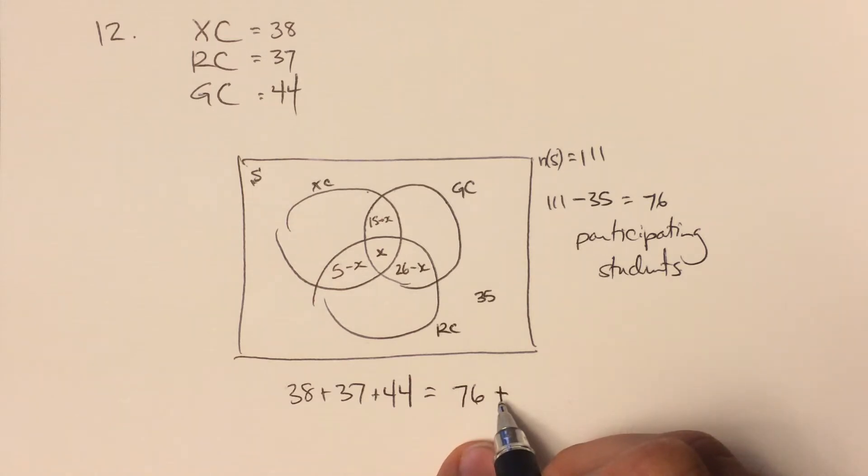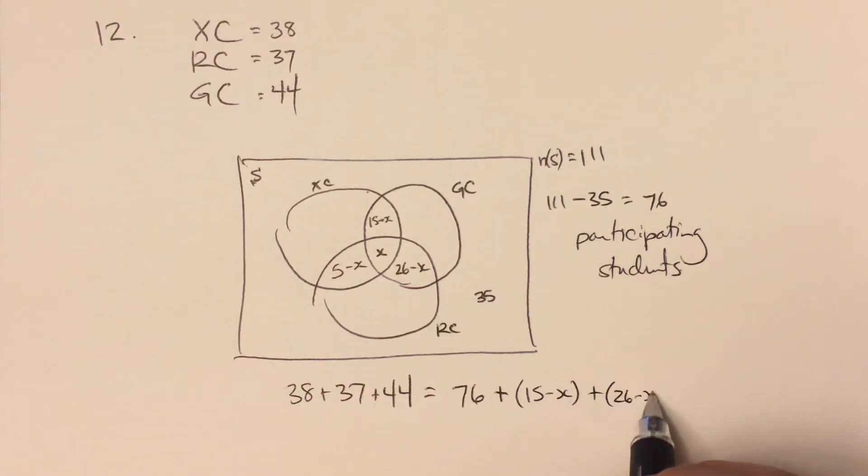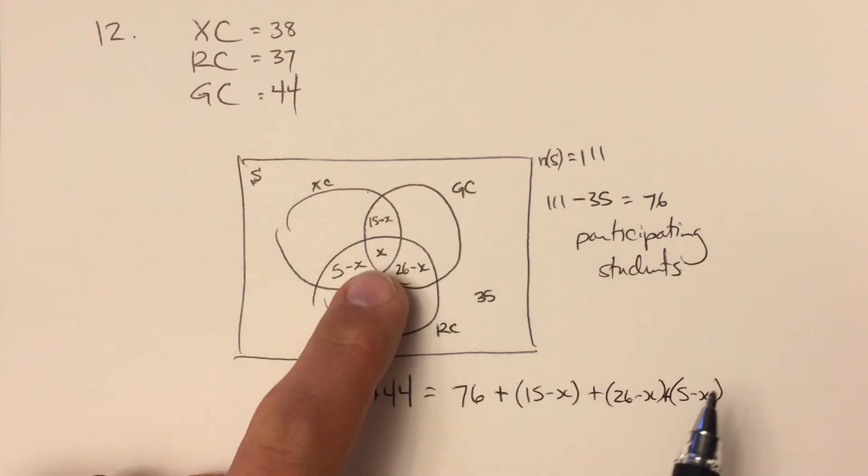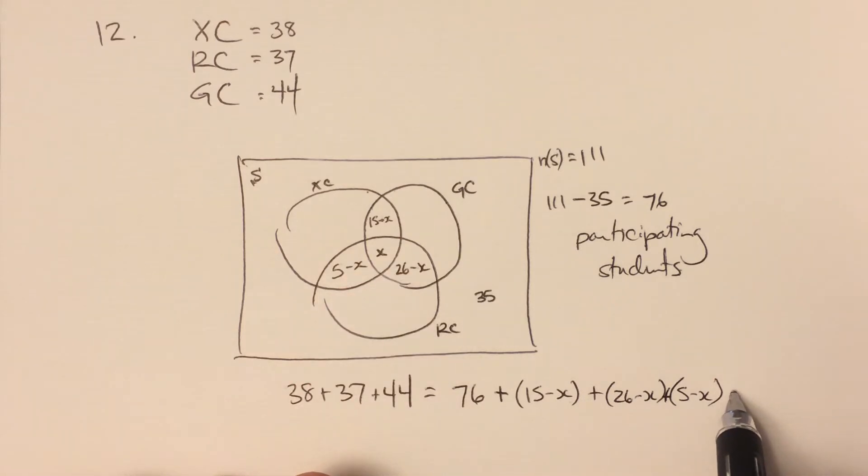So 76 plus 15 minus X. I've also over-counted by this value here, 26 minus X. And this value here, sorry, there's a plus sign in there, 5 minus X. And I've over-counted by this value twice. Plus 2X.